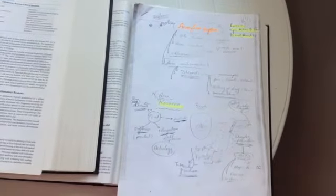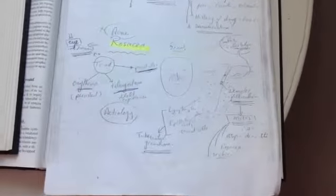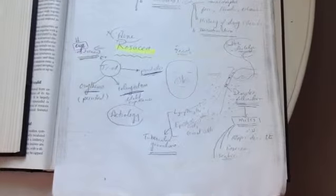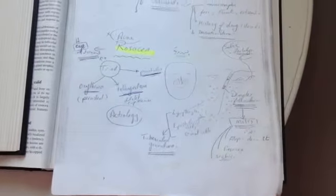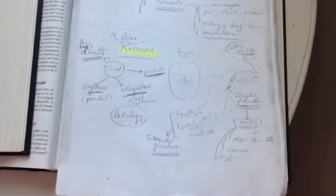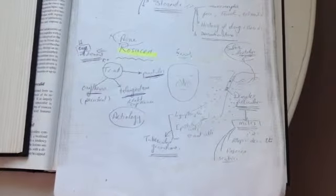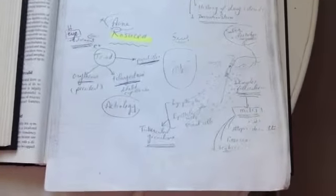This is some acne form eruptions. We will talk about rosacea now. Rosacea is clinically a triad of erythema, persistent telangiectasia, and pustules. Erythema, persistent erythema, telangiectasia, and pustules. There is also eye lesions involved.